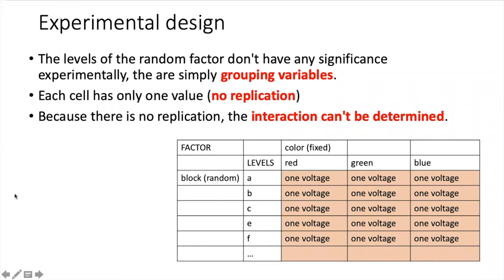Let's take a look at how this experimental design with blocking applies to our particular experiment. We see that one of the two factors is color, which is the fixed effect, and we know what the values of that are: red, green, and blue.